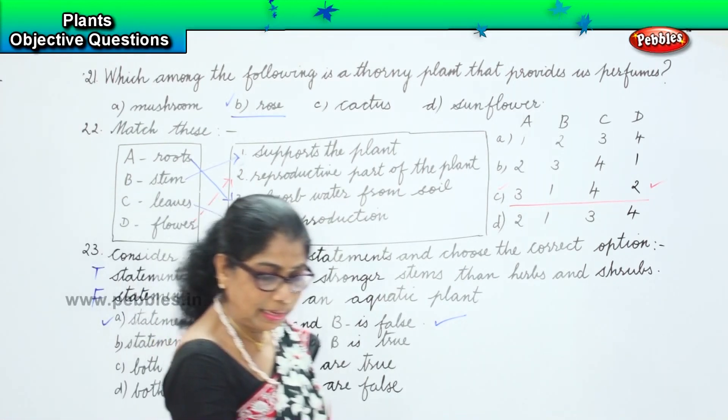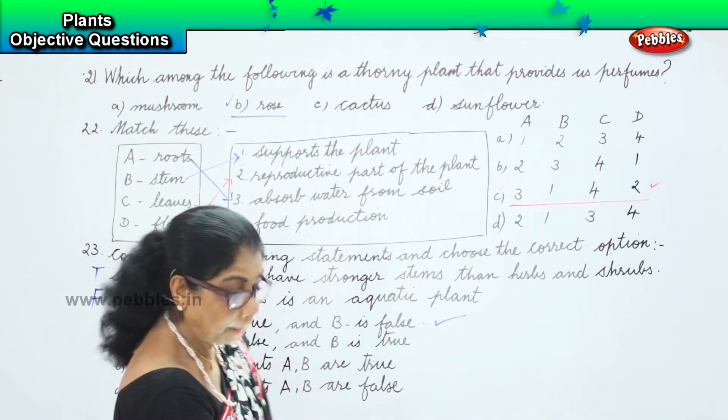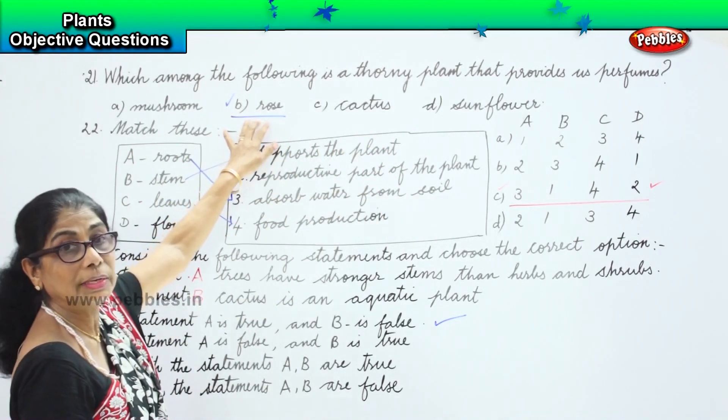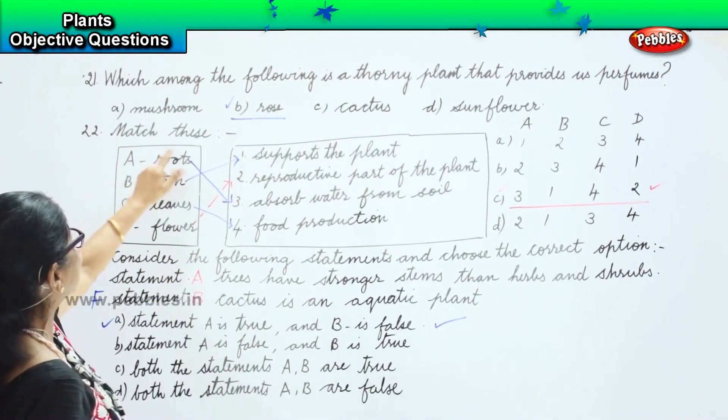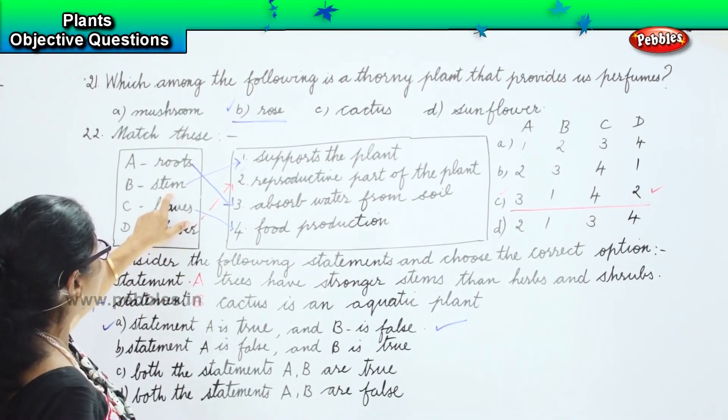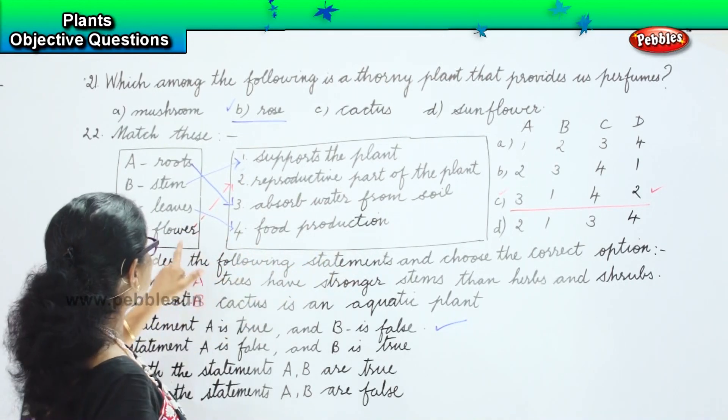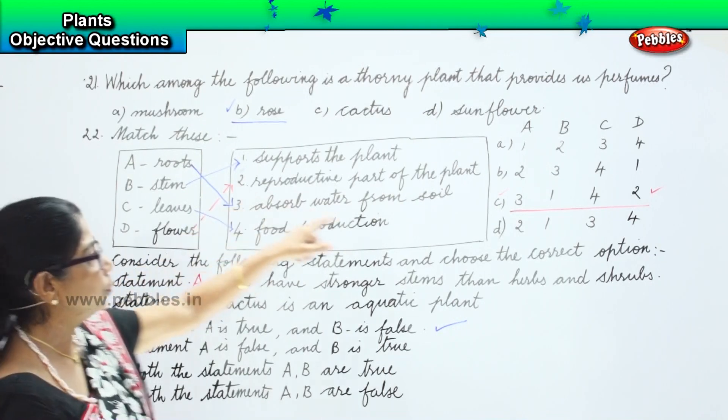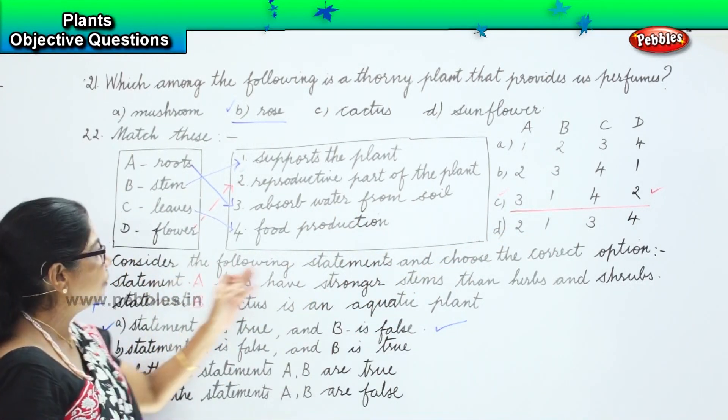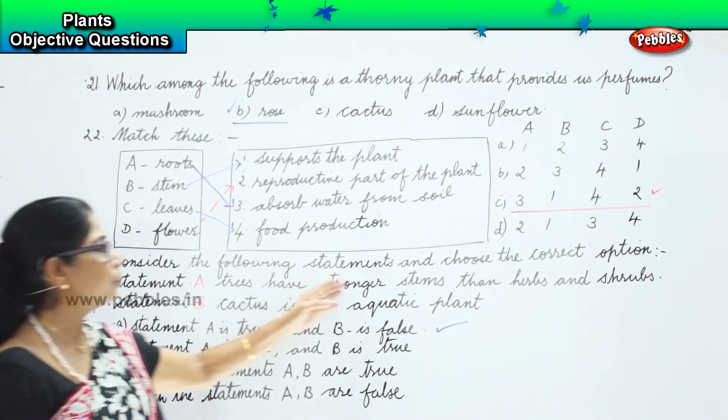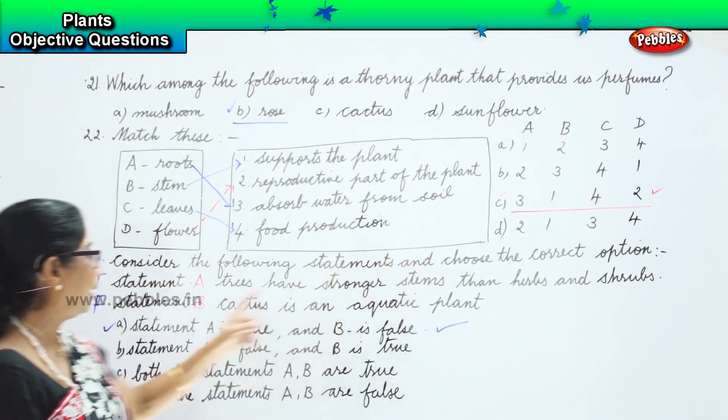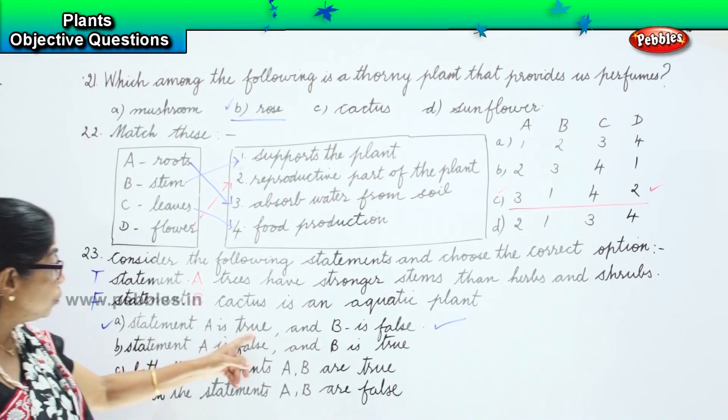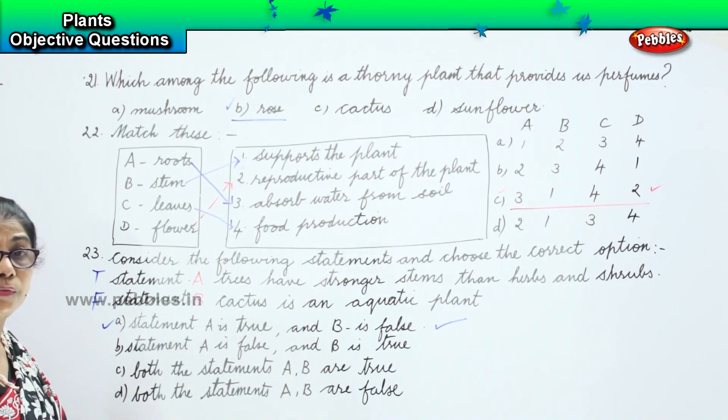Now let us read what the question and answers we have here. The twenty-first one: which among the following is a thorny plant that provide us perfume? Rose. It is a thorny plant and it provides perfume for us. Match these. We match roots to absorb water from soil. Stem supports plant. Leaves, food production. Flower, reproductive part of a plant. So we have 3, 1, 4, 2. That's the correct option. Consider the following statement and choose the correct option. Now statement A: Trees have stronger stems than herbs and shrubs. That's the true statement, correct. Cactus is an aquatic plant. That's definitely a false statement. So statement A is true, B is false. So that's the correct answer of the four options given to us.